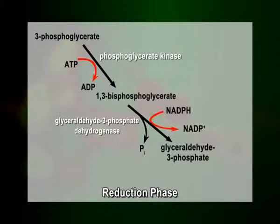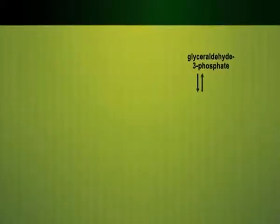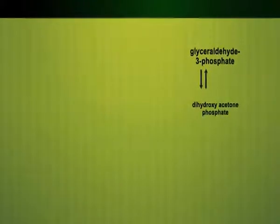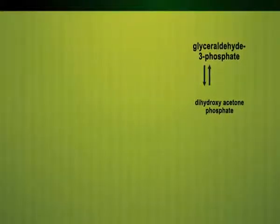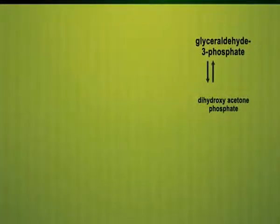Here again, two molecules of NADPH are utilized per molecule of carbon dioxide fixed. The next stage in the Calvin cycle is the regeneration of RuBP. Five 3-PGA molecules produce three RuBP molecules, utilizing three molecules of ATP. The regeneration stage begins with the isomerization of G3P into dihydroxyacetone phosphate (DHAP) by the enzyme triose phosphate isomerase — also a 3-carbon molecule.